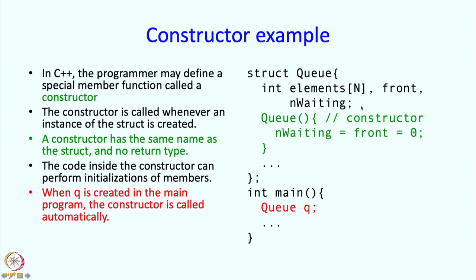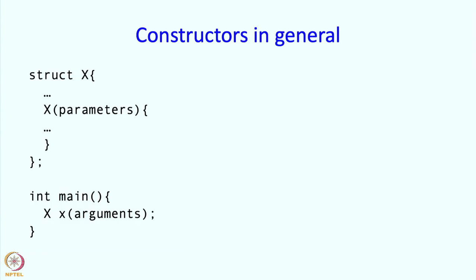The constructor is called automatically. In general, we can have constructors in any struct. Here is a struct X which is being defined and here is a constructor. In main, I am declaring little x to be an object of type X and I am supplying these arguments, and this will cause this constructor to be called.